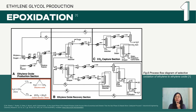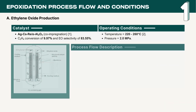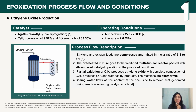This slide shows the process flow diagram of the exothermic epoxidation process. The oxidation process occurs over catalysts of silver, cesium, and rhenium co-impregnated on alpha-alumina, which allows an ethylene conversion of 10% and ethylene oxide selectivity of 84%.